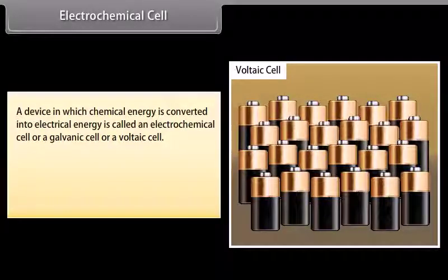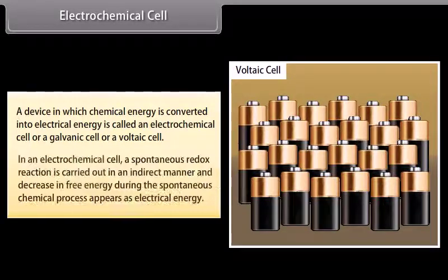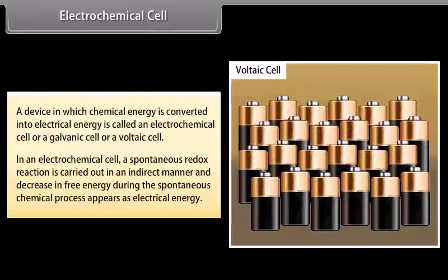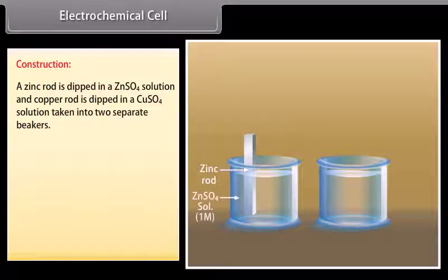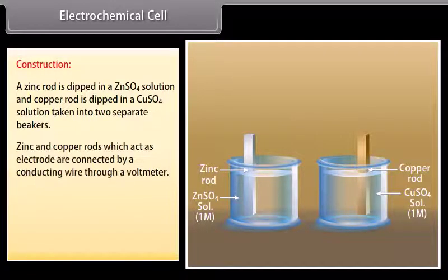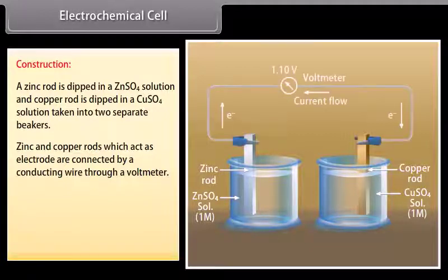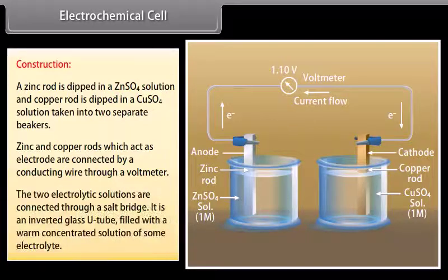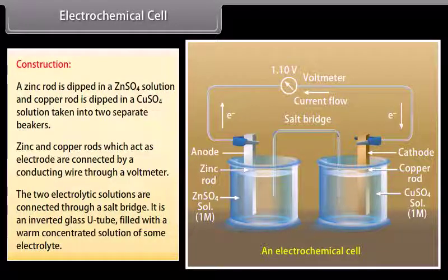Electrochemical cell: A device in which chemical energy is converted into electrical energy is called an electrochemical cell, or a galvanic cell, or a voltaic cell. In an electrochemical cell, a spontaneous redox reaction is carried out in an indirect manner, and the decrease in free energy during the spontaneous chemical process appears as electrical energy. In its construction, a zinc rod is dipped in ZnSO₄ solution and a copper rod is dipped in CuSO₄ solution, taken into two separate beakers. These rods act as electrodes and are connected by a conducting wire through a voltmeter. The two electrolyte solutions are connected through a salt bridge — an inverted glass U-tube filled with a warm concentrated solution of some electrolyte.